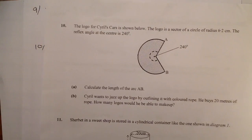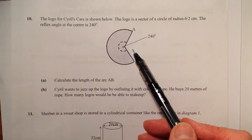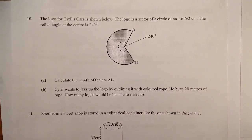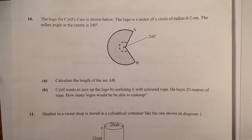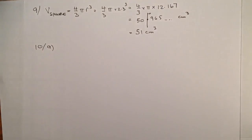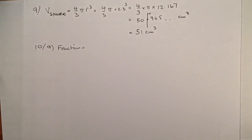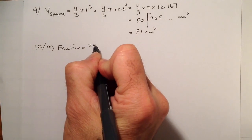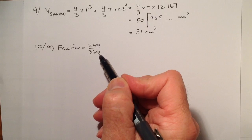Question 10 is about a logo for Cyril's Cars shown in a diagram. The logo is a sector of a circle with radius 6.2; the reflex angle is 240 degrees. We'll calculate the length of arc first. To work out this type of question, I first find the fraction of the circle I'm interested in: 240 divided by 360.